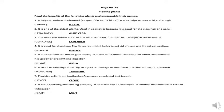Third one: the oil of this flower soothes the mind and skin. It is used in massage as an aroma oil. Your answer is lavender. Fourth one: it is good for digestion. Tea flavoured with it helps to get rid of nose and throat congestion. Your answer is ginger.